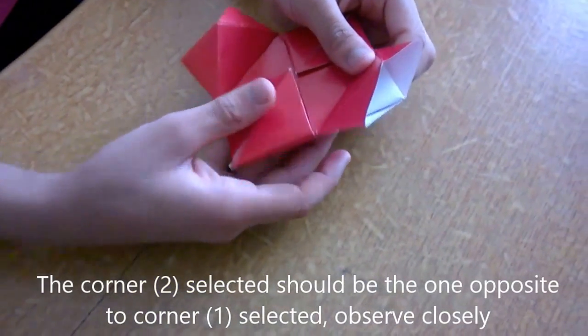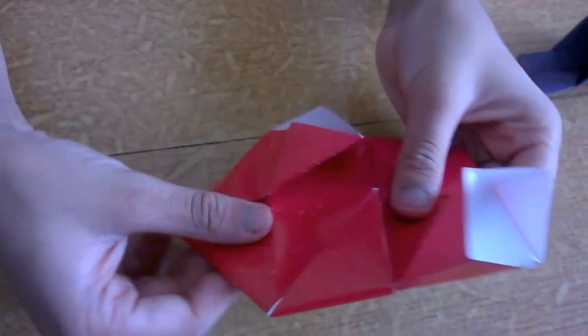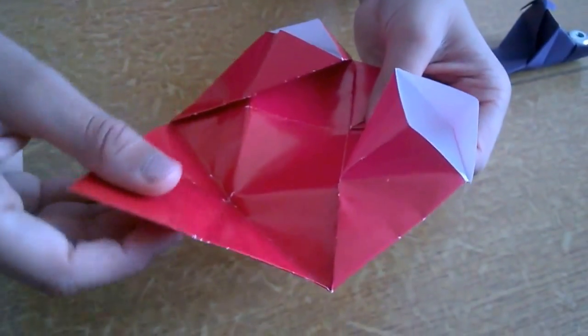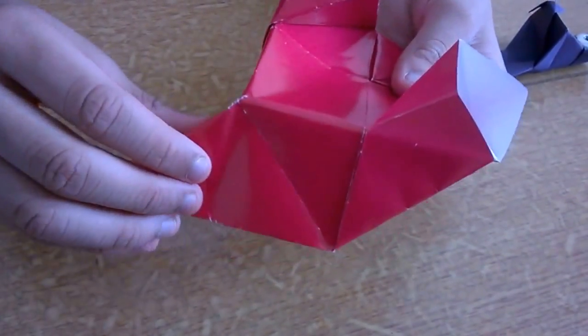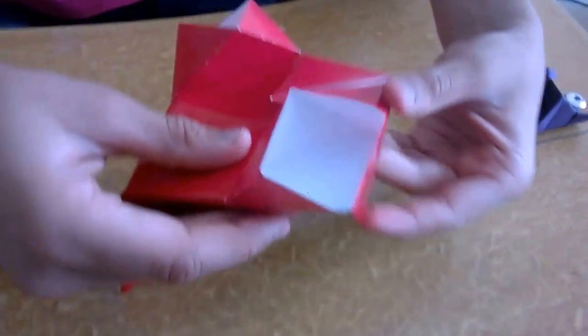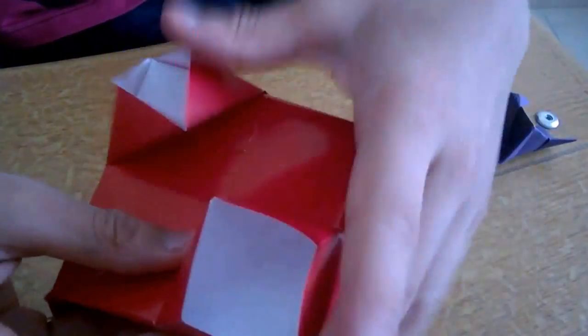Now you have to do a reverse fold. Take the first one, open it, and then just take out the diamond and pull it down. Flatten it. Do it to the other side also. Make sure that these don't open.